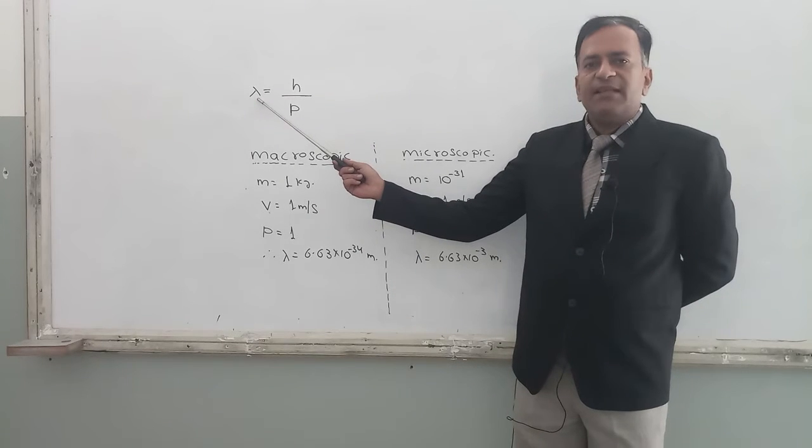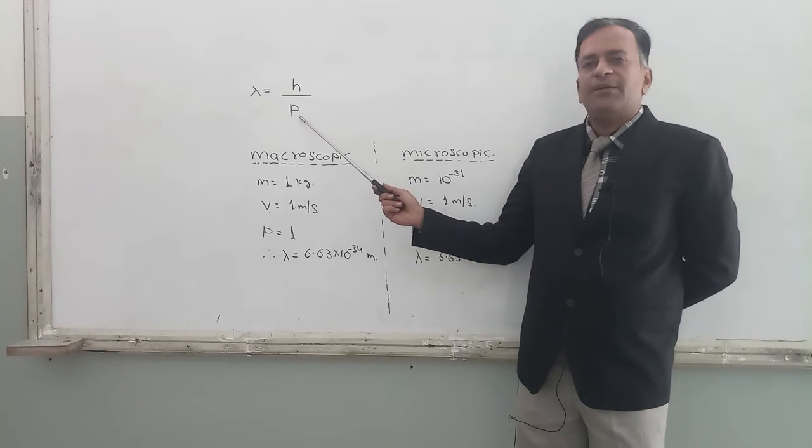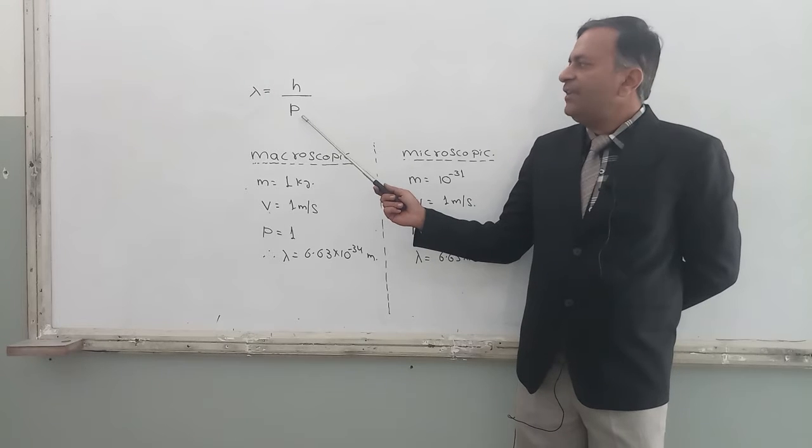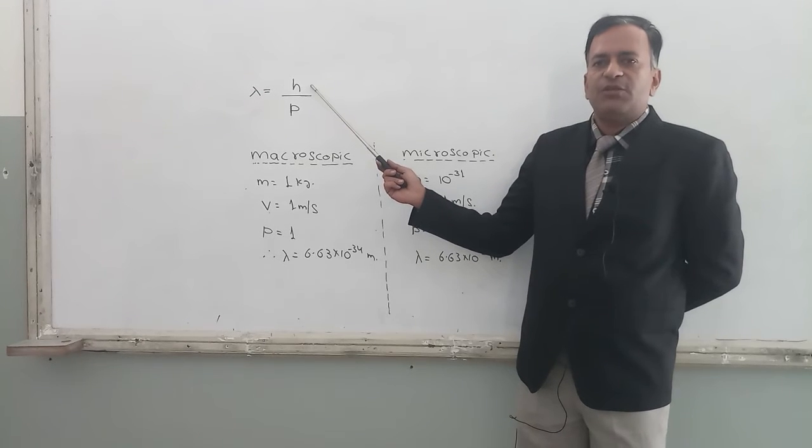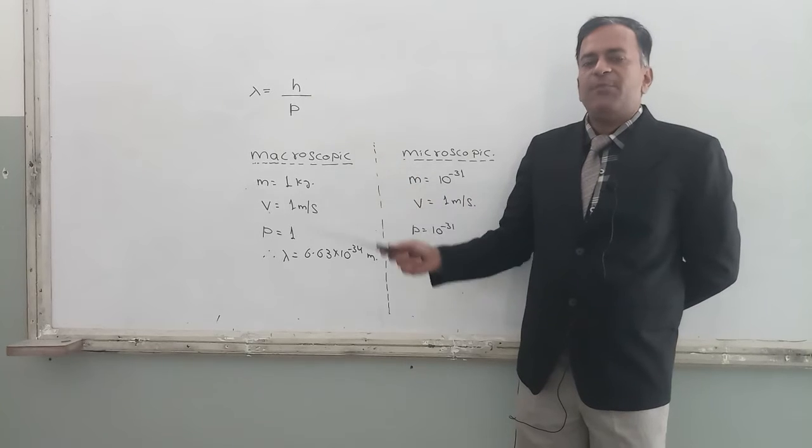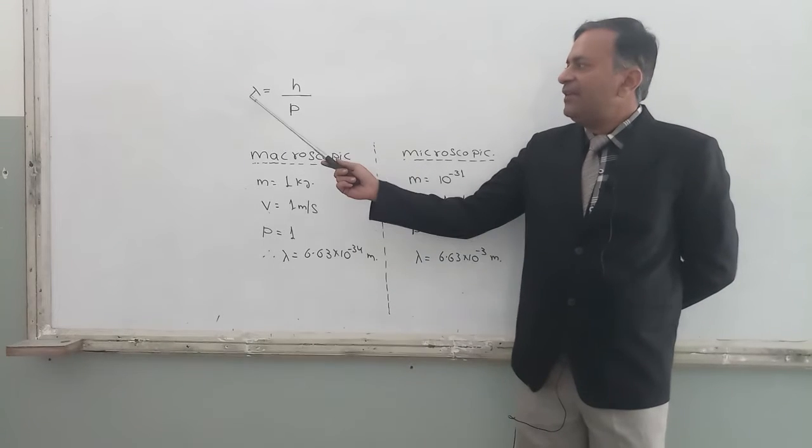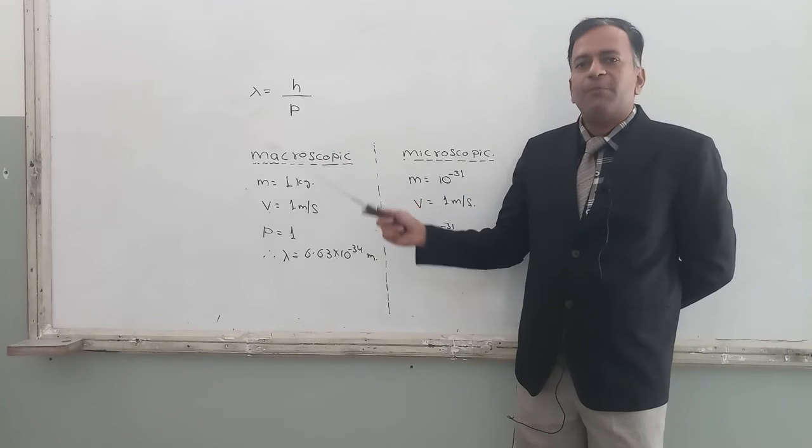Wavelength, lambda, that is the wave nature. Momentum is the particle nature, and the only thing between them is Planck's constant. So Planck's constant is a particular number that can relate the wave nature with the particle nature.